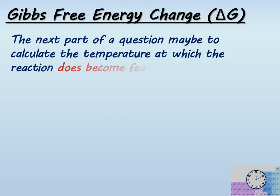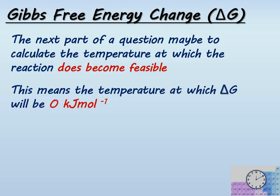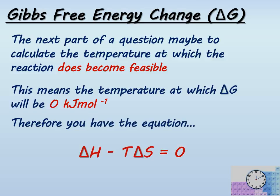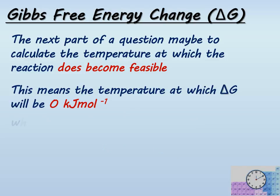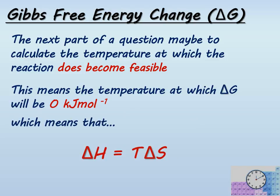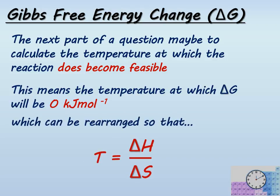The next part of an exam question is likely to be to calculate the temperature at which the reaction does become feasible — that is, the temperature at which delta G is zero. If we have the equation delta G = delta H − T·delta S and delta G is zero, then we can rearrange so that delta H equals T·delta S, and therefore the temperature equals delta H divided by delta S.